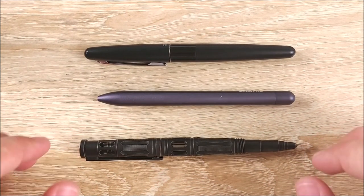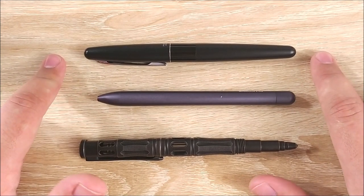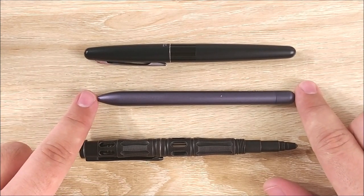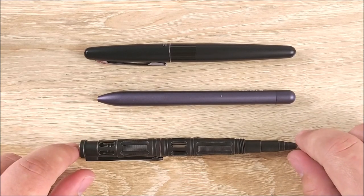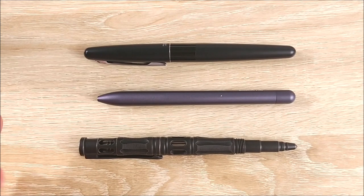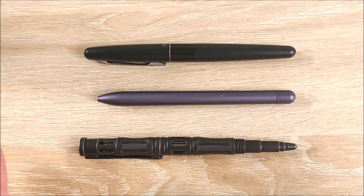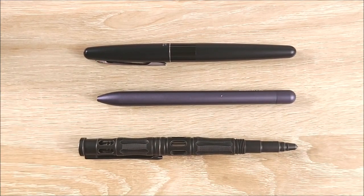On to the size comparison. At the bottom we have the Tactic, then we have a Baron Fig Squire, and we have the Pilot Metropolitan. You can see it's right in line with the Pilot Metropolitan. It is a little bit longer than the Squire, of course, just because the Squire doesn't have a cap. It's a twist out pen. But overall, it's very close to the Metropolitan.